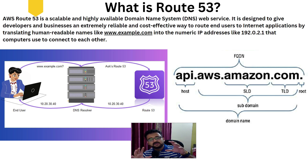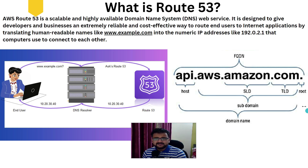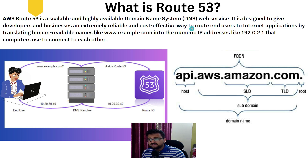The concepts remain the same — it's just that it is proprietary to AWS. By definition, Route 53 is a scalable, highly available domain name system web service. It is designed to give developers and businesses an extremely reliable, cost-effective way to route end users to internet applications by translating human-readable names like www.example.com.